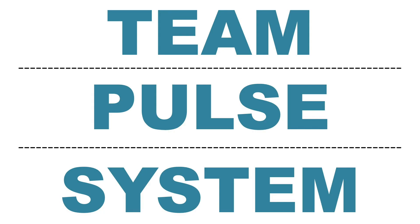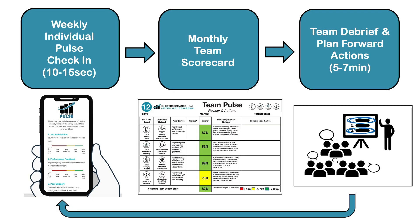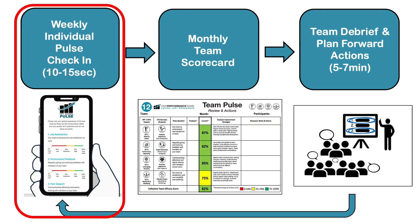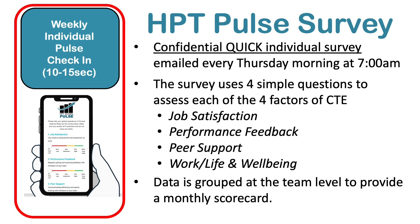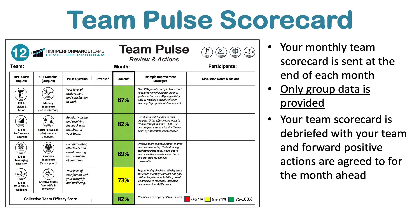Let's take a look at how a team pulse system allows us to support each other and maximise team health. There are three components. Starting with our weekly pulse check-in: we send each team member an individual pulse survey. It takes seven to ten seconds to complete — a quick, confidential survey using four simple questions about collective efficacy. We then group the data at a team level to create the monthly scorecard, showing those four factors and that overall team health or collective efficacy rating, with only group data — keeping individual responses confidential.